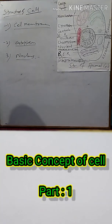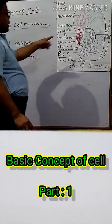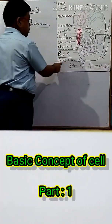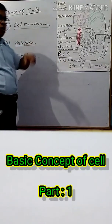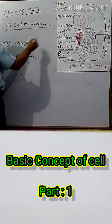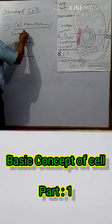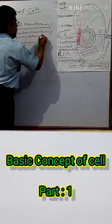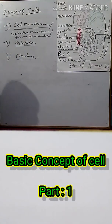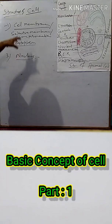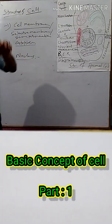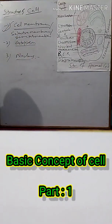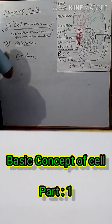Number one: the cell membrane. In this diagram, the outer covering is called the plasma membrane. The plasma membrane is also called the cell membrane, selective membrane, or semi-permeable membrane. Its main function is to give the cell its shape and a fixed rigidity or structure.